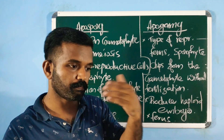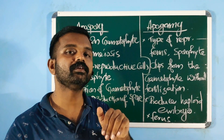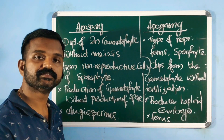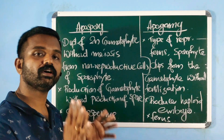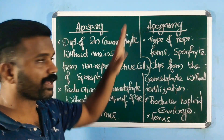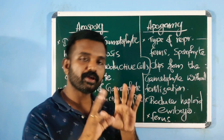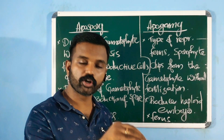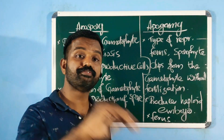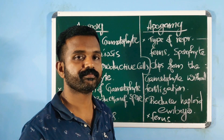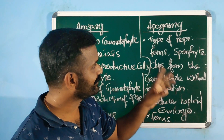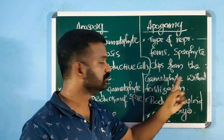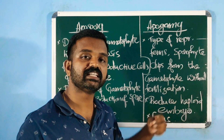So apospory is the development of a diploid gametophyte from non-reproductive cells of the sporophyte without meiosis. Apogamy is a type of reproduction seen in lower groups such as ferns and pteridophytes, where the sporophyte develops from the gametophyte without fertilization.